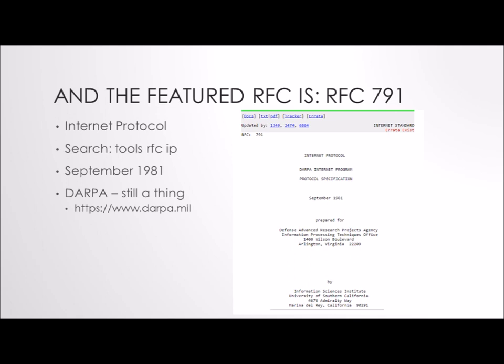I get to all of my RFCs using the search terms 'tools' and then 'RFC' and then whatever I'm going to search for. The reason I do that is because the graphic gives you the history of all documents related to a particular RFC, and the URL includes 'tools' right in it. That's my advice to you.